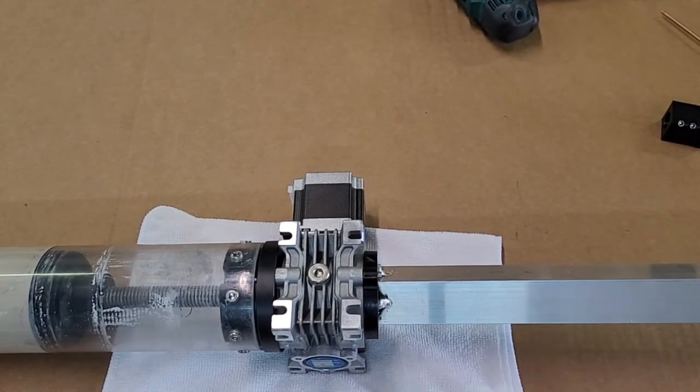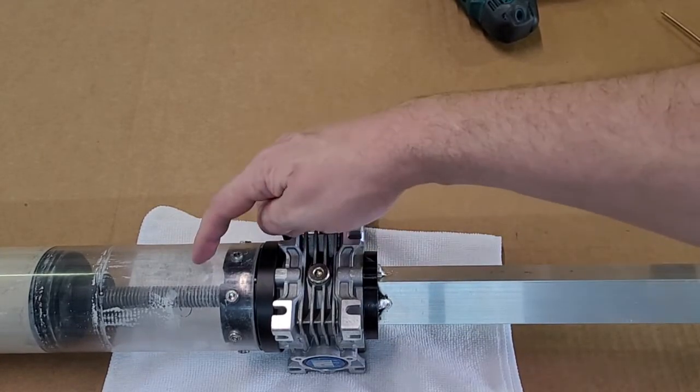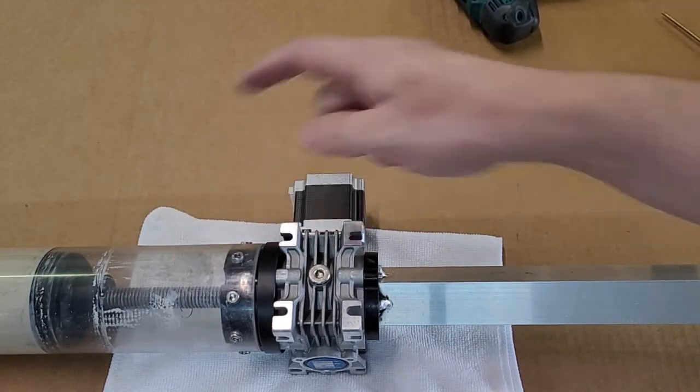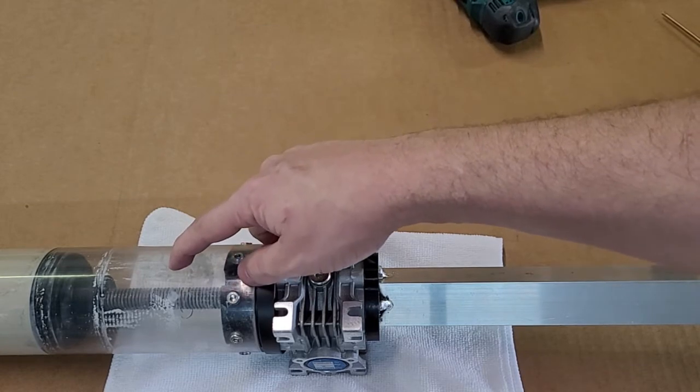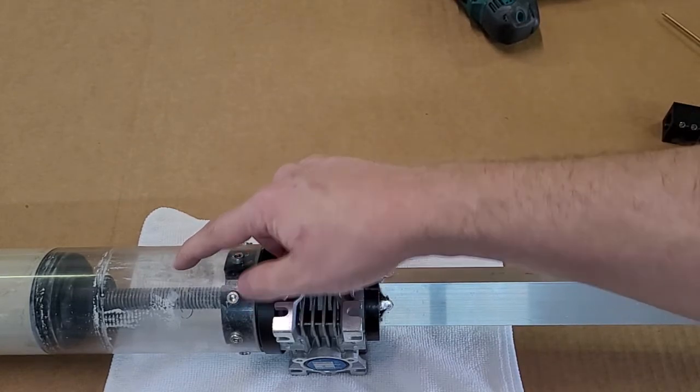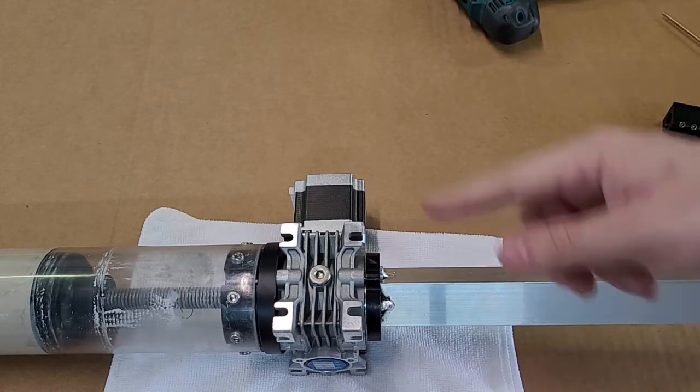While in operation, the Acme screw does not spin. It only moves up and down vertically. If with the anti-rotator on you see this screw spinning, please contact our tech support department. The anti-rotator prevents rotation.